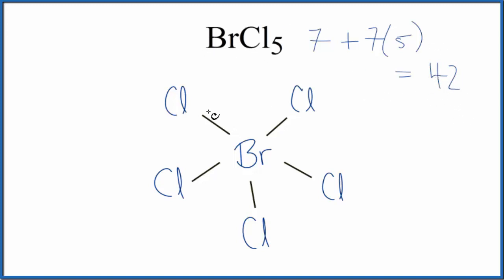I've already put the bonds between the chlorine atoms and then that central bromine. So we've used 2, 4, 6, 8, 10. 10 valence electrons. We have 32 left.